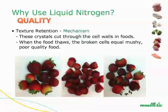The first photo is of fresh strawberries. The second photo shows strawberries frozen in a zero degree Fahrenheit freezer very slowly, then thawed. The volume of juice shows the internal damage that occurred because of the slow freeze. The final photo shows strawberries frozen with liquid nitrogen and thawed. The little bit of juice indicates the protection that freezing quickly with liquid nitrogen can provide.